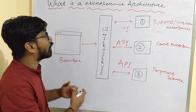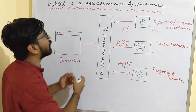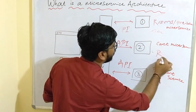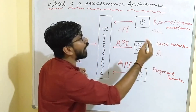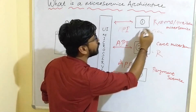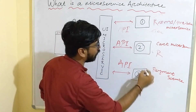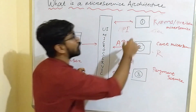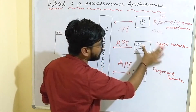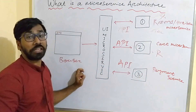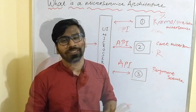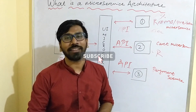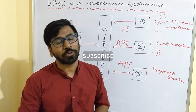Another advantage of microservice architecture is that it is reliable. If you have any problem with one service, the other services will continue to work fine. For example, if one service is down, the other two services will work without any problem. Thank you for watching — please do like, share, comment and subscribe. Thank you so much.